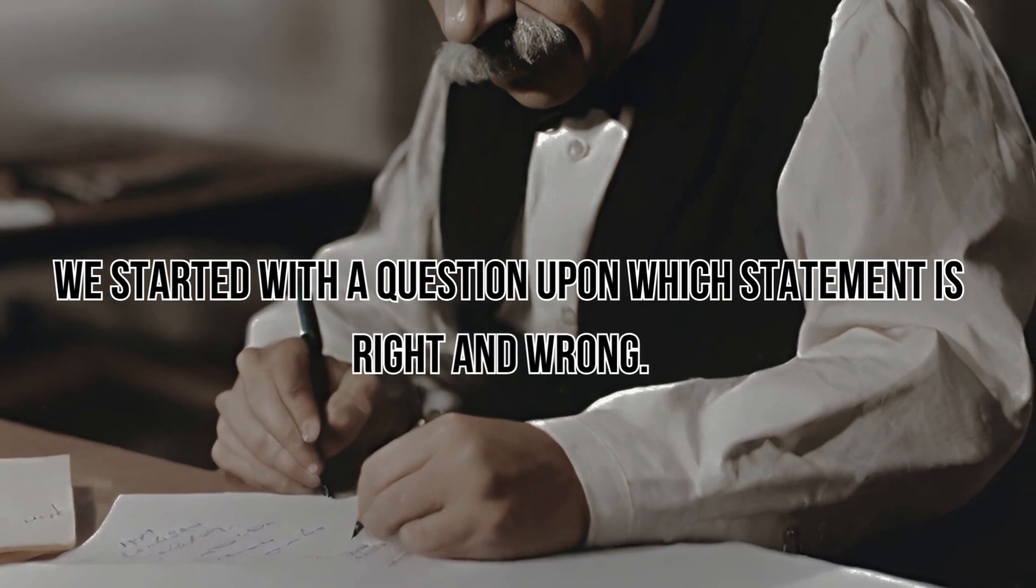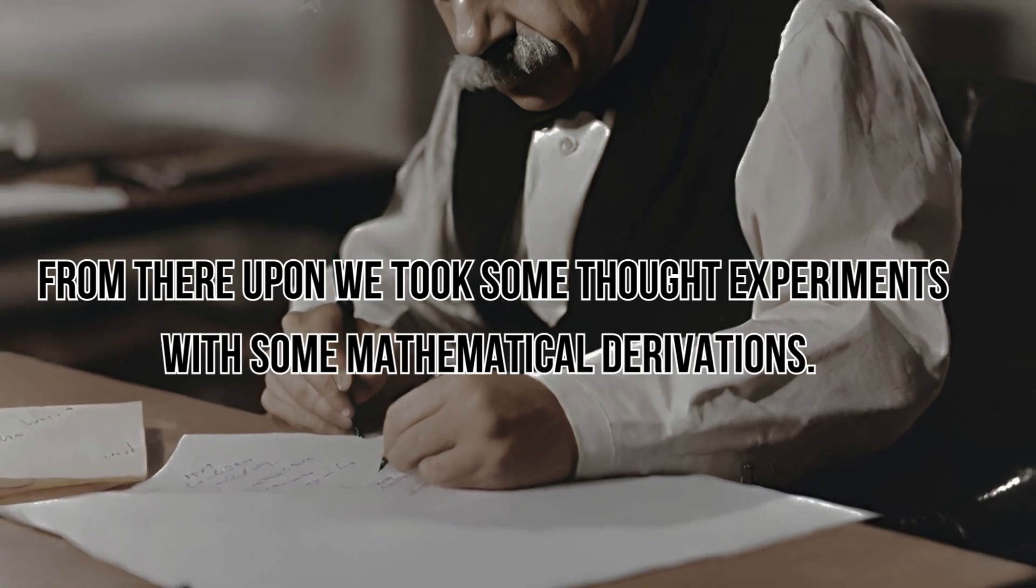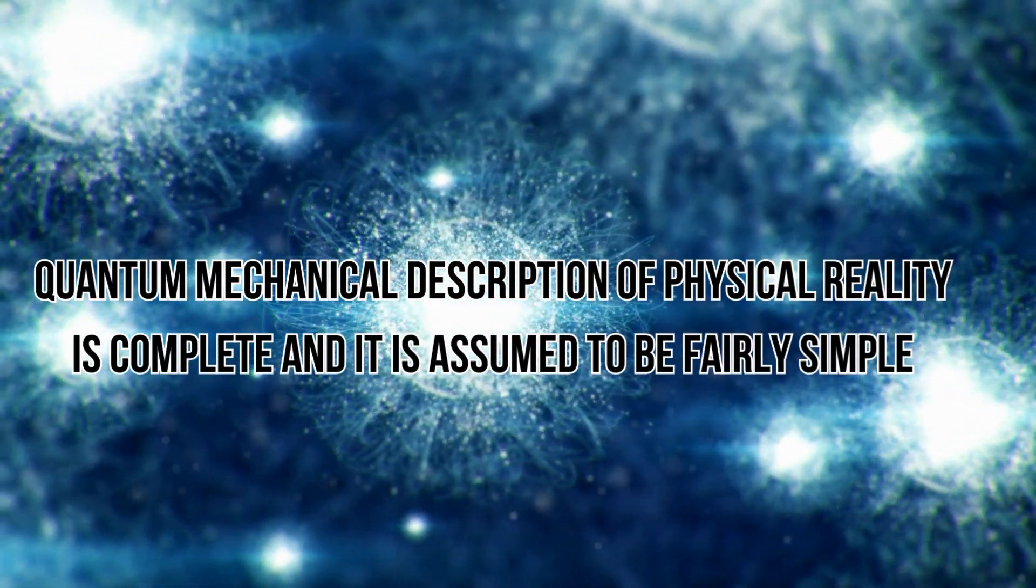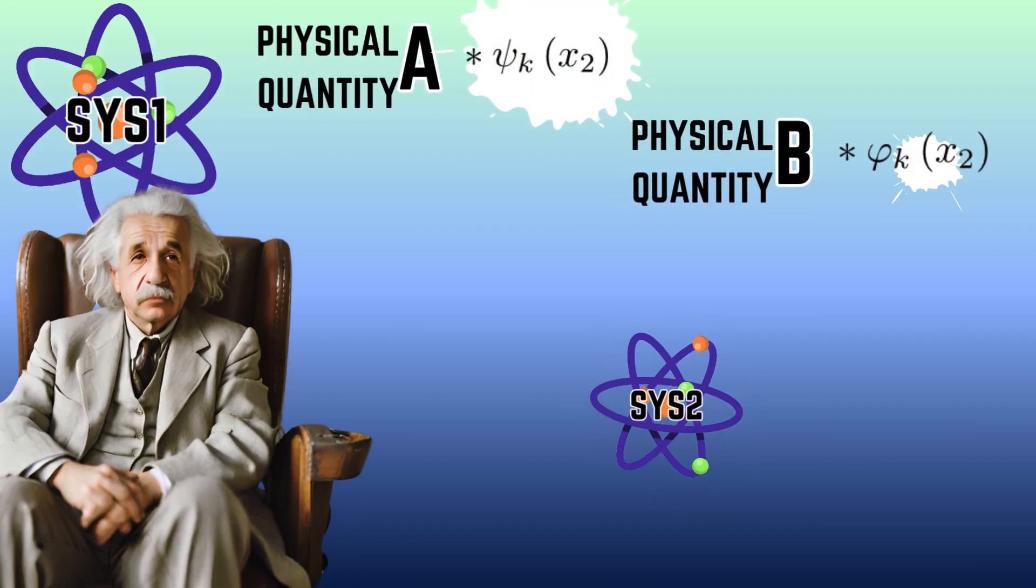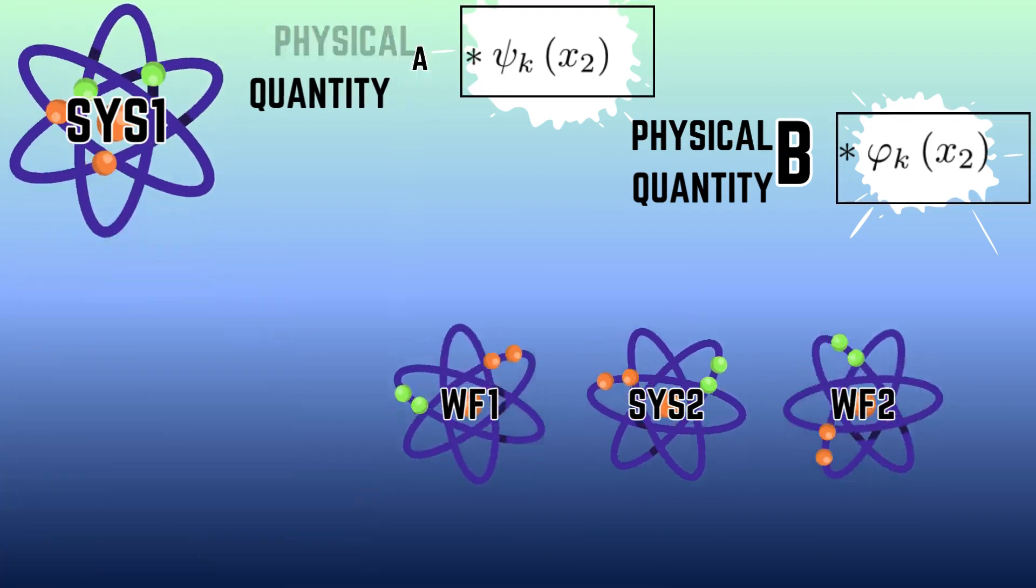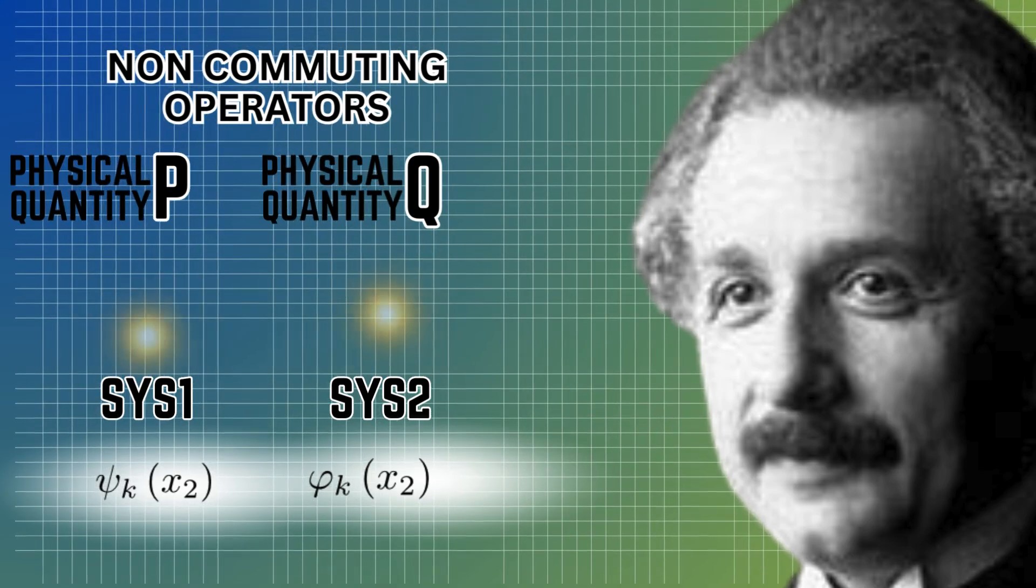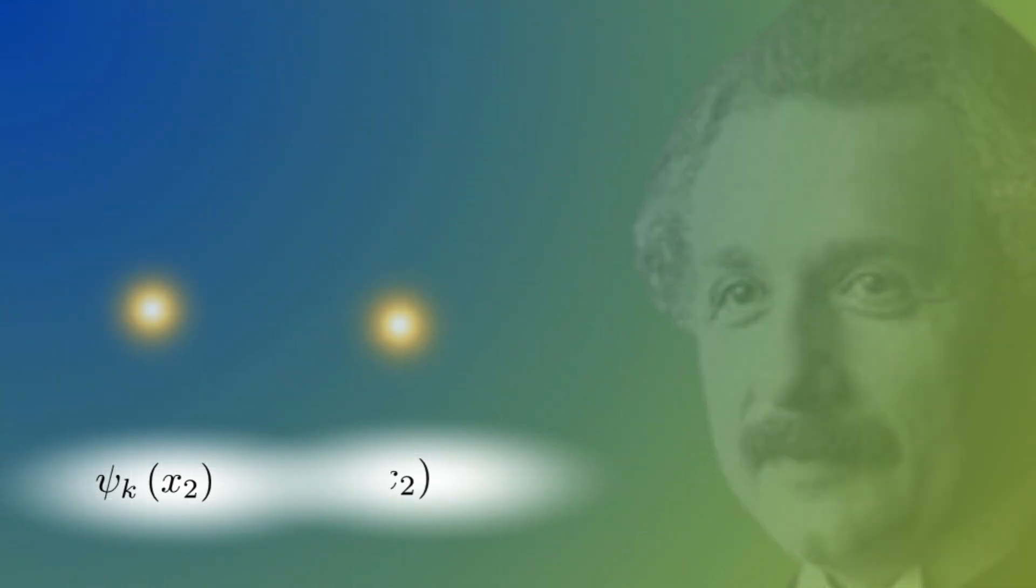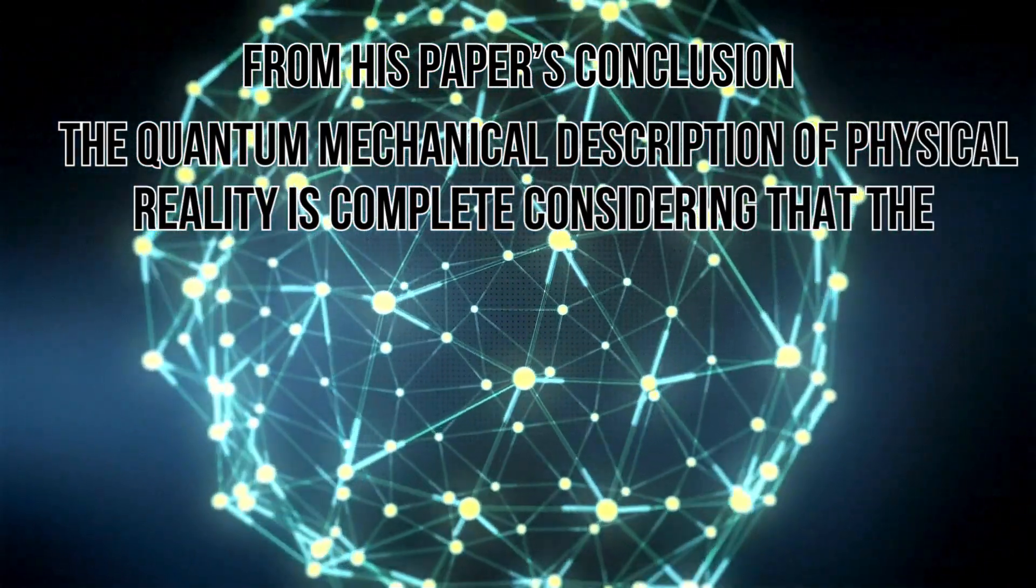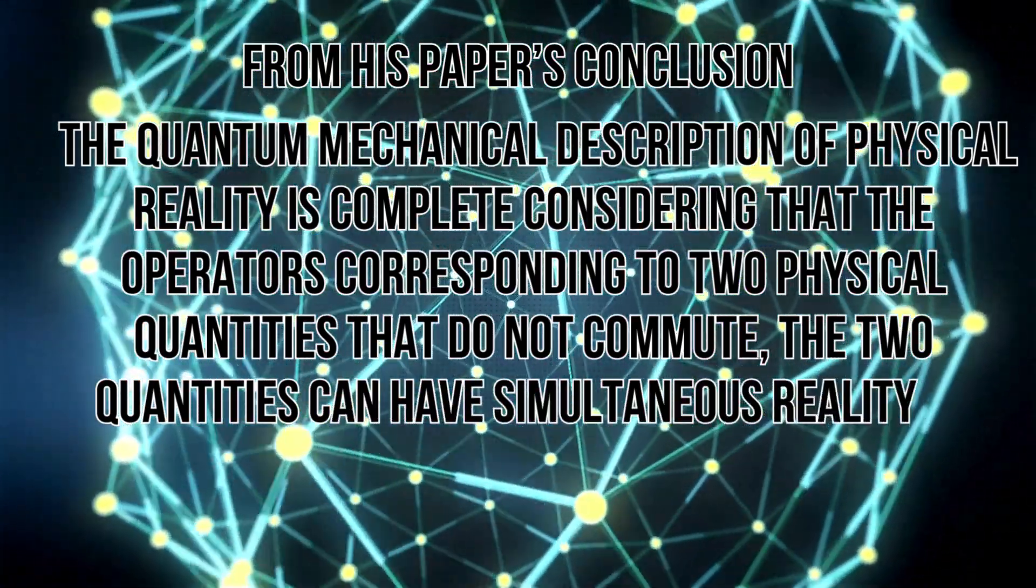We started with a question upon which statement is right and wrong. From there, we took some thought experiments with some mathematical derivations. We started from assuming that the quantum mechanical description of physical reality is complete, and it is assumed to be fairly simple. From there, Einstein showed that for the second system, by measuring the first system, acquired two different wave functions to the same reality. Then we showed that the two eigenfunctions in general are possible to be its noncommuting operators with corresponding eigenvalues. Therefore, it concludes like this that the quantum mechanical description of physical reality is complete, considering that the operators corresponding to two physical quantities that do not commute, the two quantities can have simultaneous reality as mentioned before.